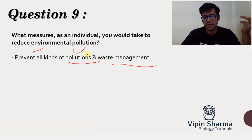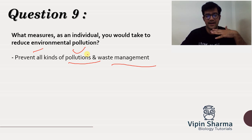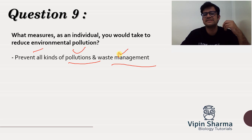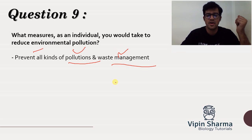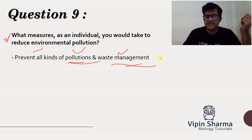Then there is water pollution control, sound pollution, noise pollution — any kind of pollution we create at our end can be prevented. Further, waste management includes reuse, recycle, and reduce — reduction of waste. All these points can be considered in this question. It is an open-ended question and you can write a lot of material under these two categories.